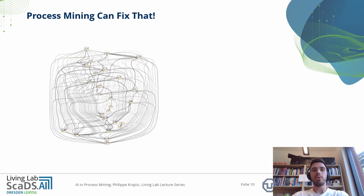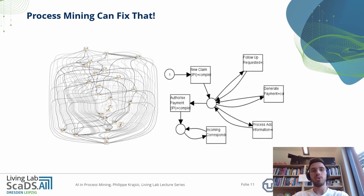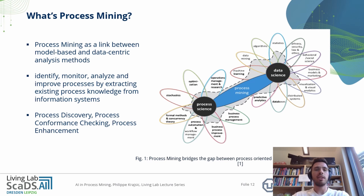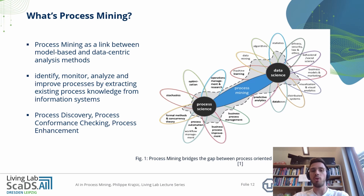Now we come back to our spaghetti process. The question is how we get from this to a leaner version of this process, and one answer is process mining. Process mining is basically a link between model-based analysis methods like business process improvement or business process management, and data-centric analysis methods like machine learning or statistics. Process mining is used to identify, monitor, analyze, and improve processes by extracting existing process knowledge — in the form of an event log — from information systems.